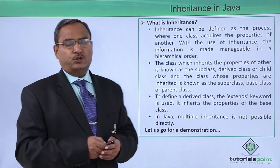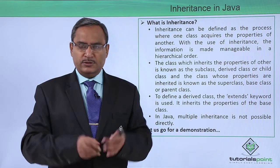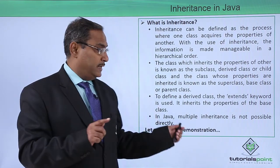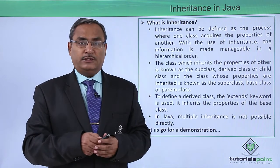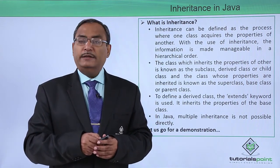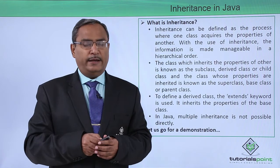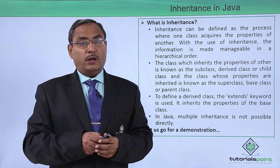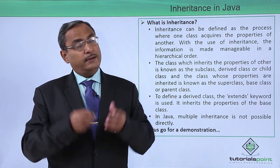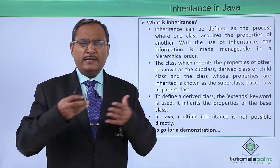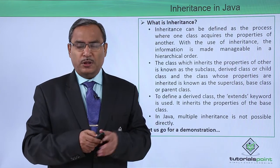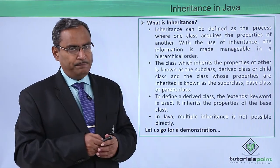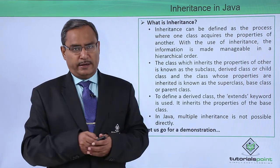In Java, multiple inheritance is not possible. In multiple inheritance, there are multiple base classes and only one derived class, and that is not directly possible in Java. Otherwise, single inheritance, multi-level inheritance, hierarchical inheritance, and hybrid inheritance are all possible. Different kinds of inheritances are supported, but multiple inheritance is not allowed in Java directly.